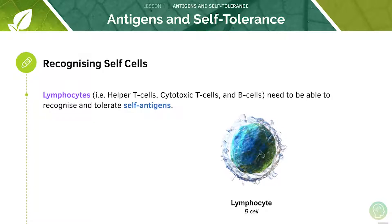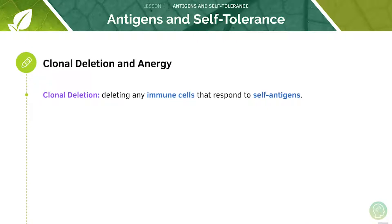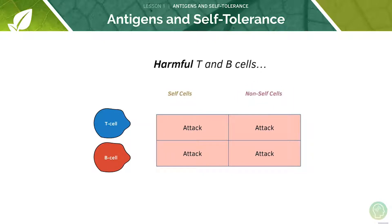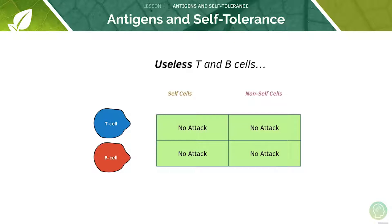The lymphocytes are able to recognise and tolerate self-antigens. Now let's look at clonal deletion — this is what happens when we delete immune cells that respond to self-antigens. In an ideal world, T and B cells would not attack our self-cells but would attack the non-self cells that appear in the body. However, if the T and B cells are harmful, they would attack both the self-cells and the non-self-cells. If they were useless, they wouldn't attack any kinds of cells at all.